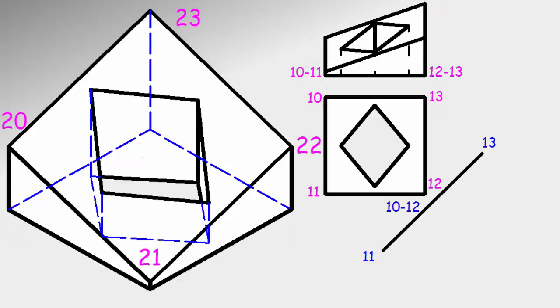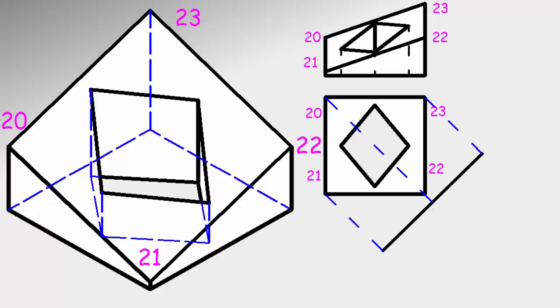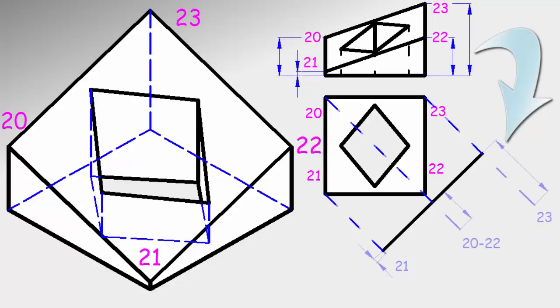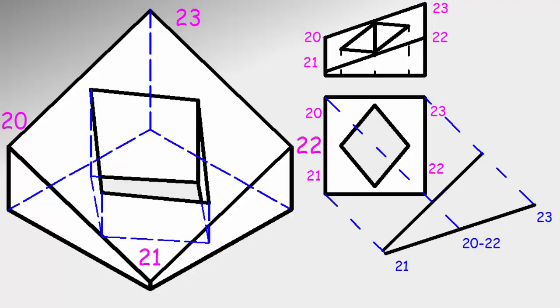We continue with the upper base: 20, 21, 22, and 23. We draw perpendiculars from each vertex and measure the elevation. Taking these dimensions to the new view and joining them, we have the top, which is now projecting.